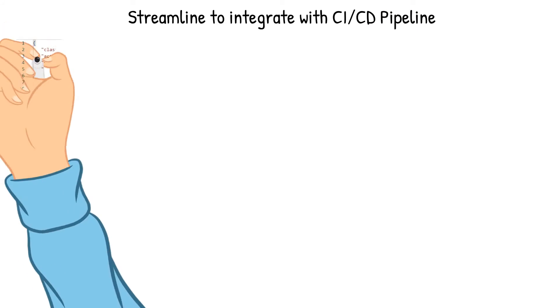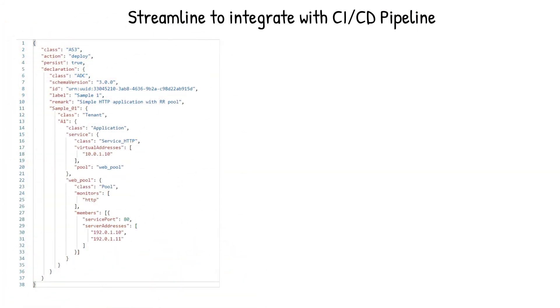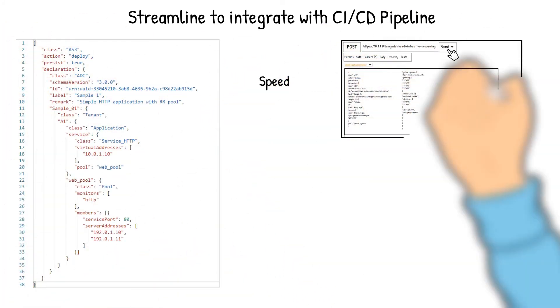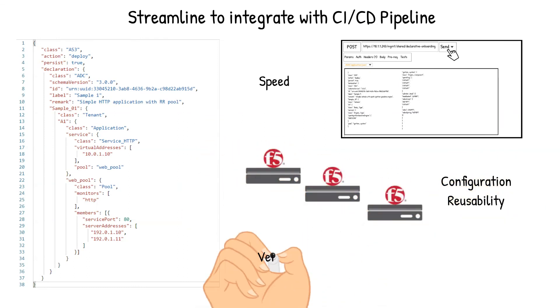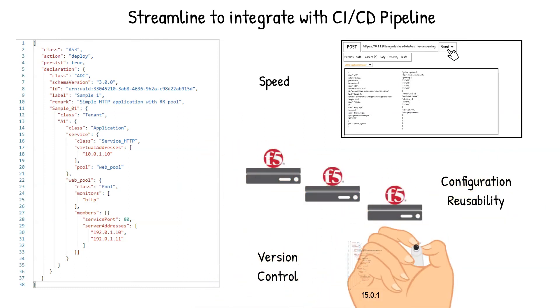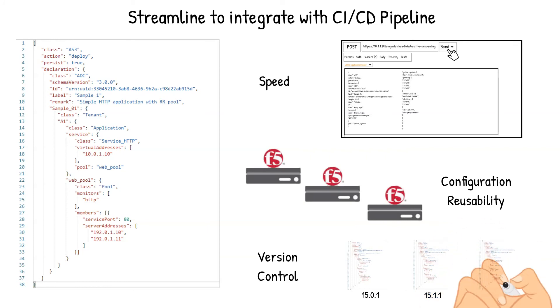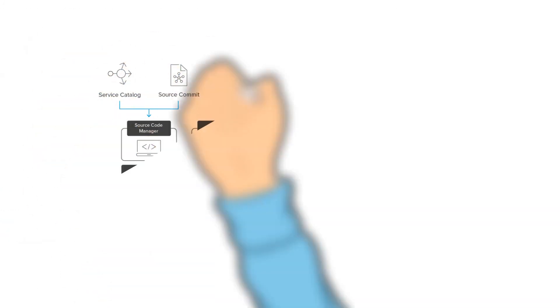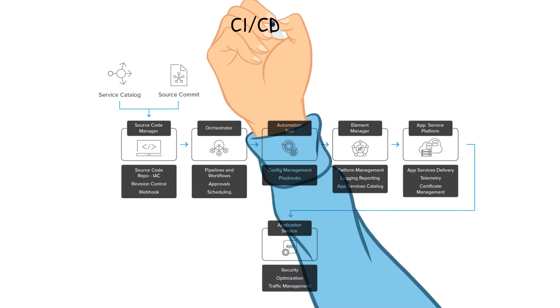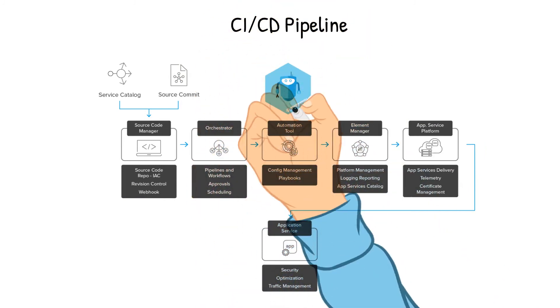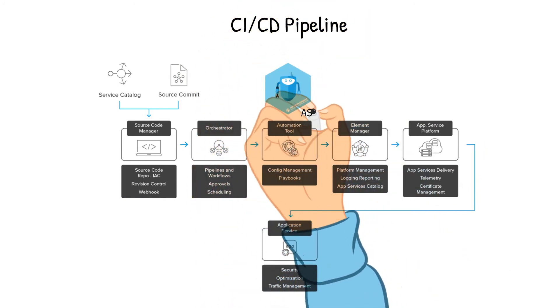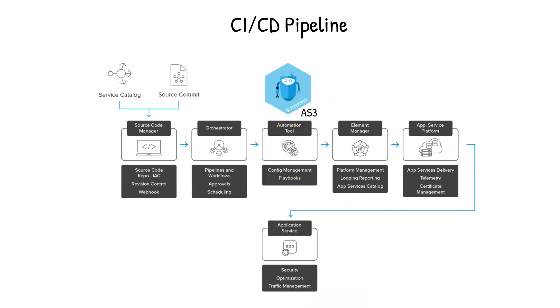What this can do for you and your organization is provide the application configuration as code for speed, configuration reusability, and version control to create detailed configuration management, which will streamline the deployment of the BIG-IP application configurations to integrate with the CI/CD pipeline to allow for automation and orchestration by using F5's automation toolchain.